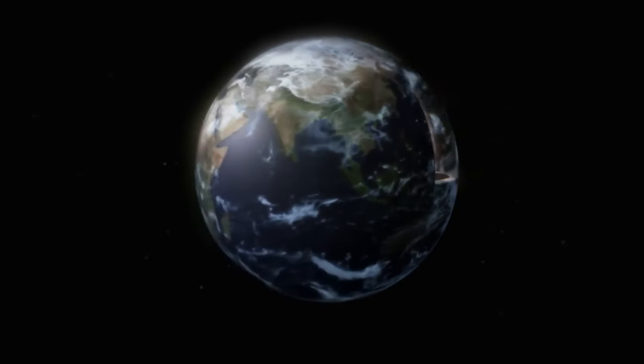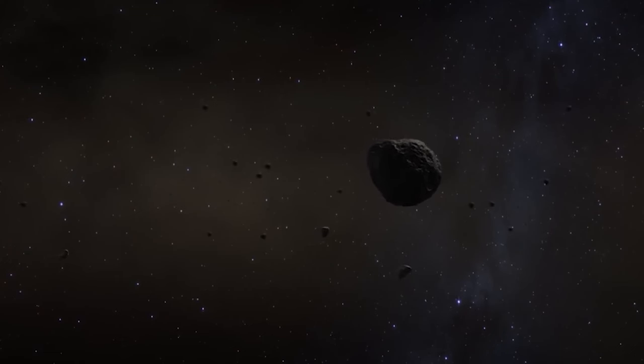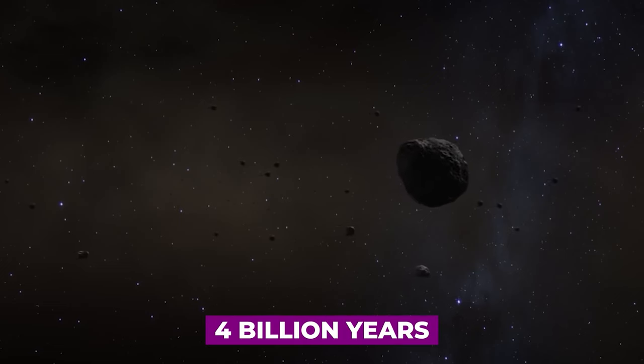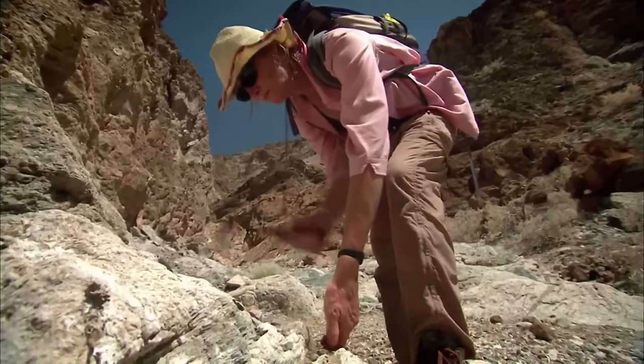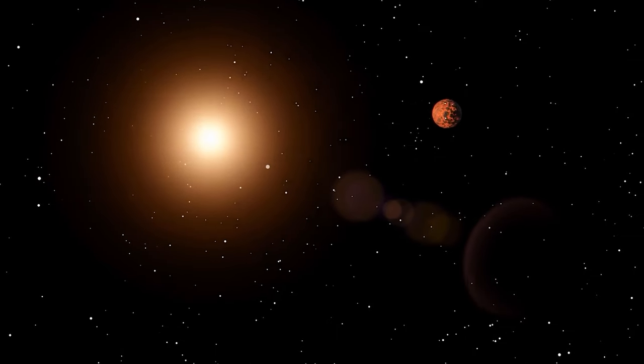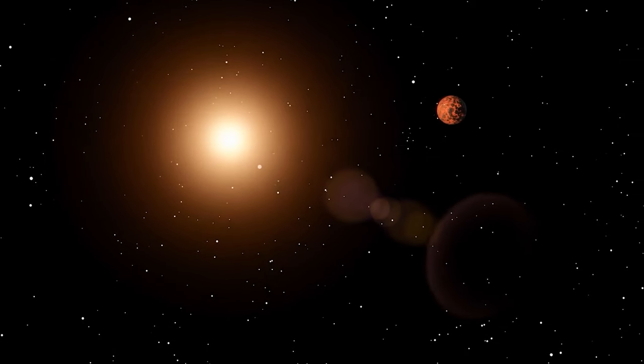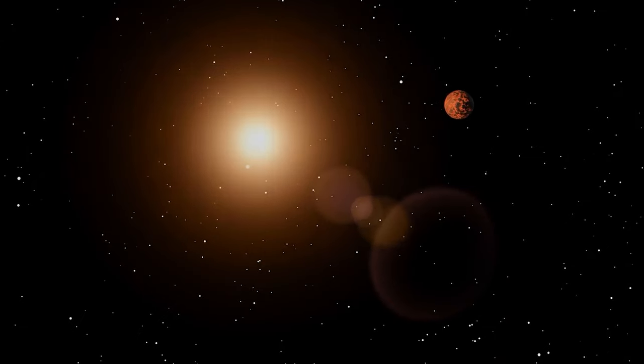Although the rocks that record the earliest parts of earth's history have been destroyed or deformed over time by more than 4 billion years of geology, scientists can use modern rocks, moon samples, and meteorites to figure out when and how the earth and moon formed, and what they might once have looked like.